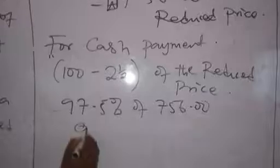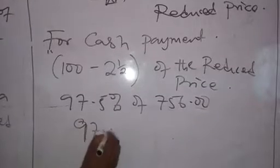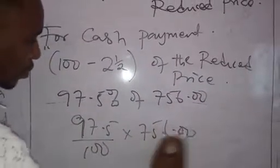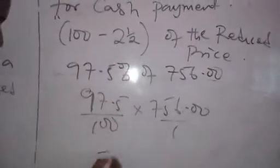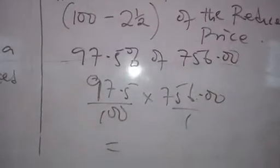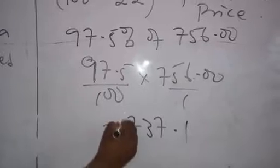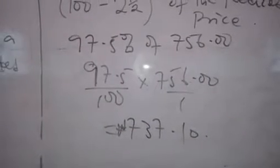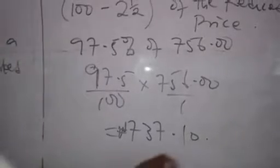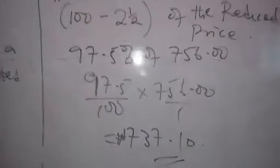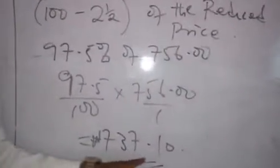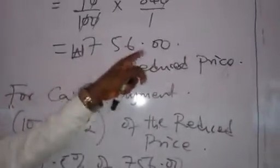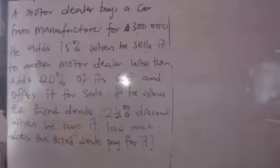So we calculate 97.5 over 100 times 756.00 over 1. When you solve it out, you get 737.1 Naira. So if you pay cash, you are going to buy the goods for 737.1 Naira. But if you are not paying cash, it is going to cost you 756 Naira.